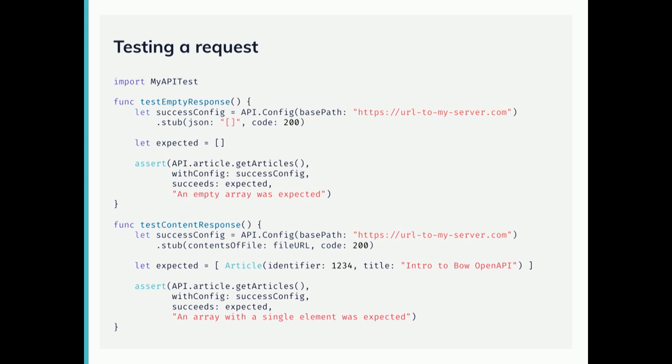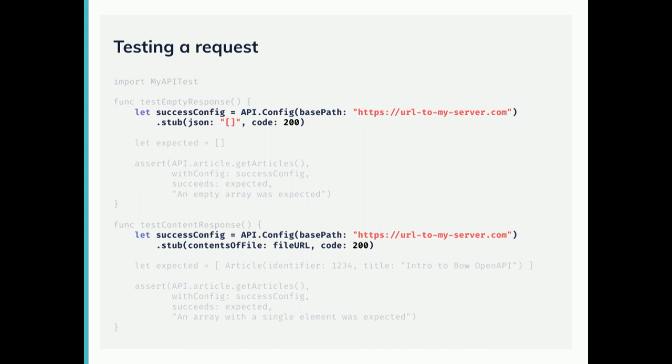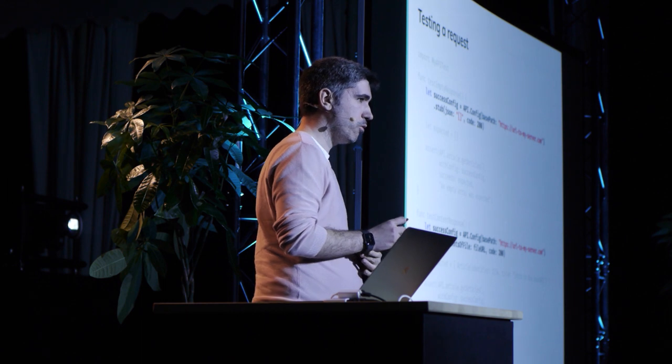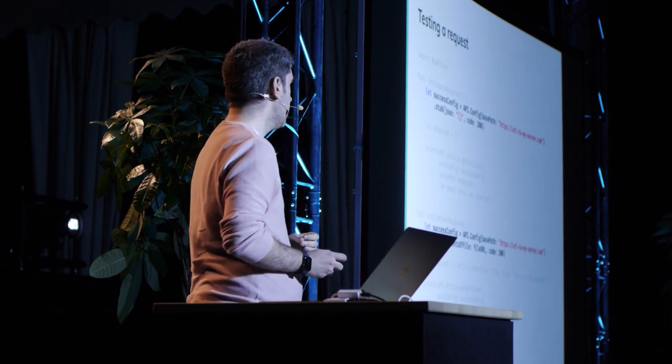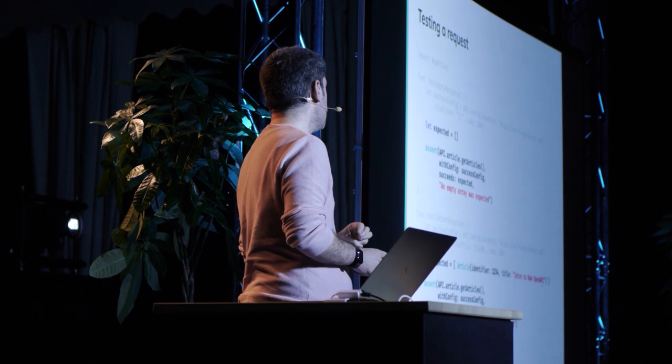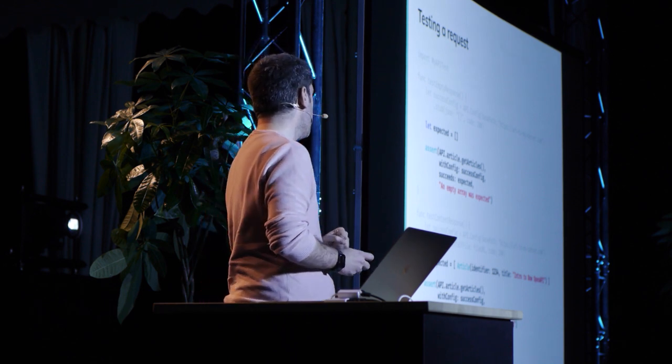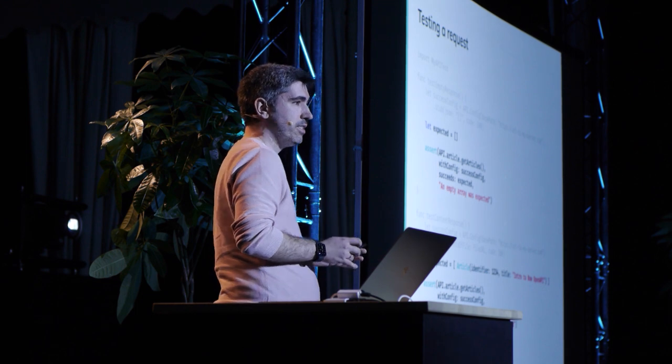The generated package includes a module that is specific for testing. This module augments the API configuration with methods that let us stub responses to our requests. With this addition, we can now test different scenarios with no mocks and always using the exact same code that we will be using in production. With custom assertions included in the generated package, we can check that our logic behaves and returns the values that we expect.